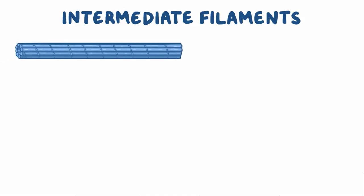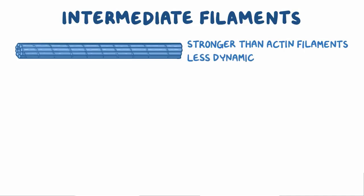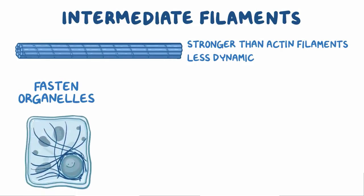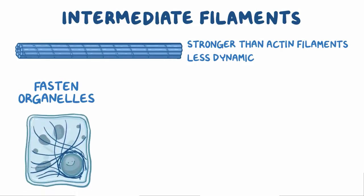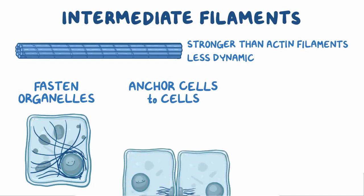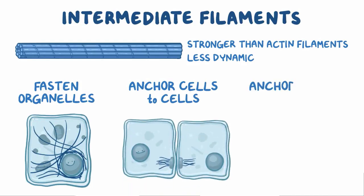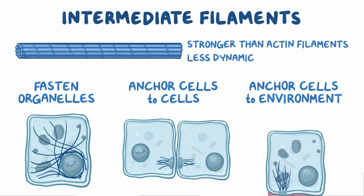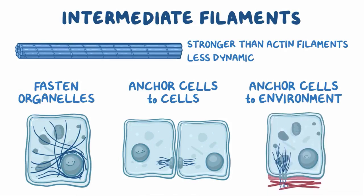Finally, there are the intermediate filaments, which fall in between actin filaments and microtubules in terms of size. Intermediate filaments are made of interlaced threads of protein, like a rope. This makes them stronger than actin filaments, but also less dynamic. Intermediate filaments mostly fasten various organelles like the nucleus in place within the cell. They also help anchor cells to neighboring cells through cell-to-cell junctions, and to their surrounding environment — the extracellular matrix. Because they're less dynamic, they tend to degrade slowly and last longer within the cell.